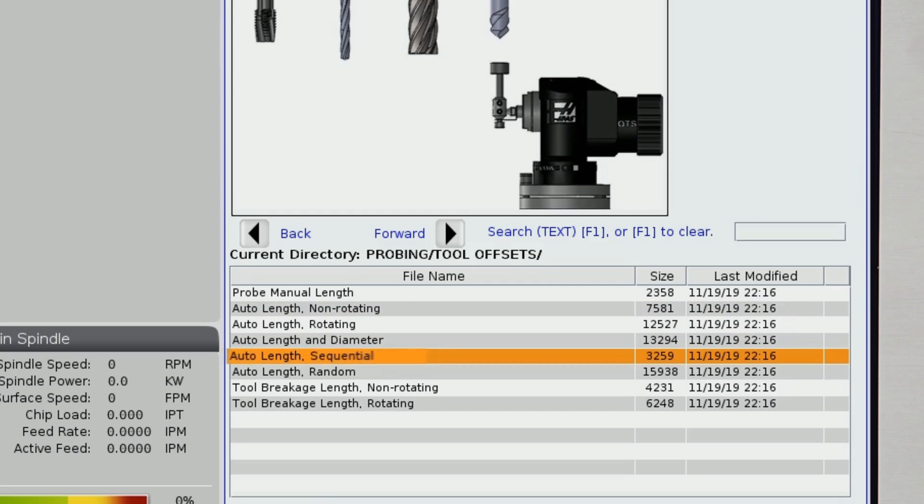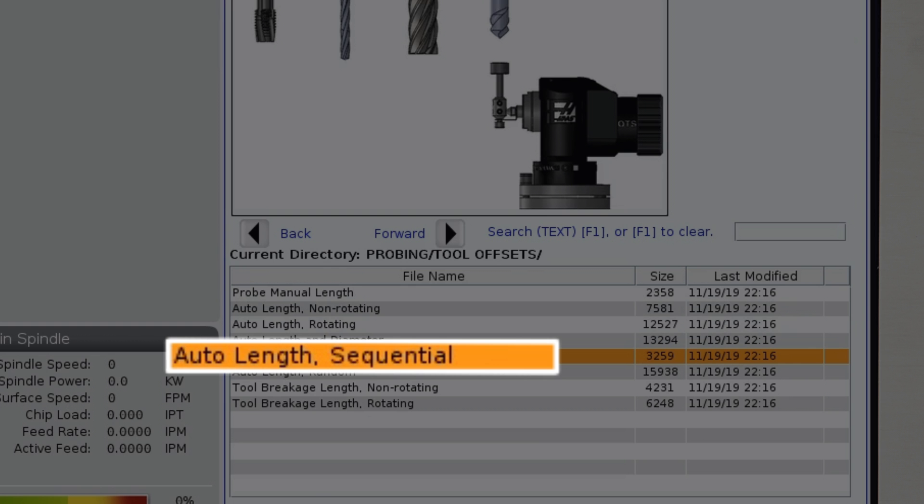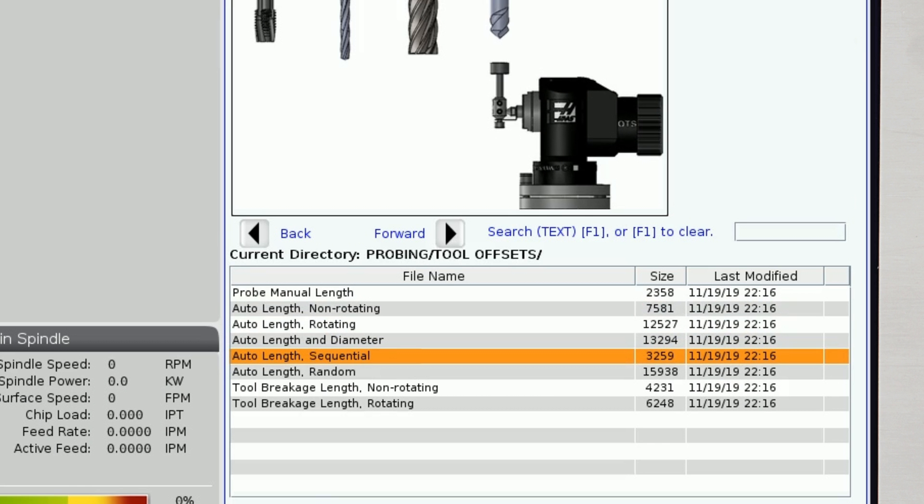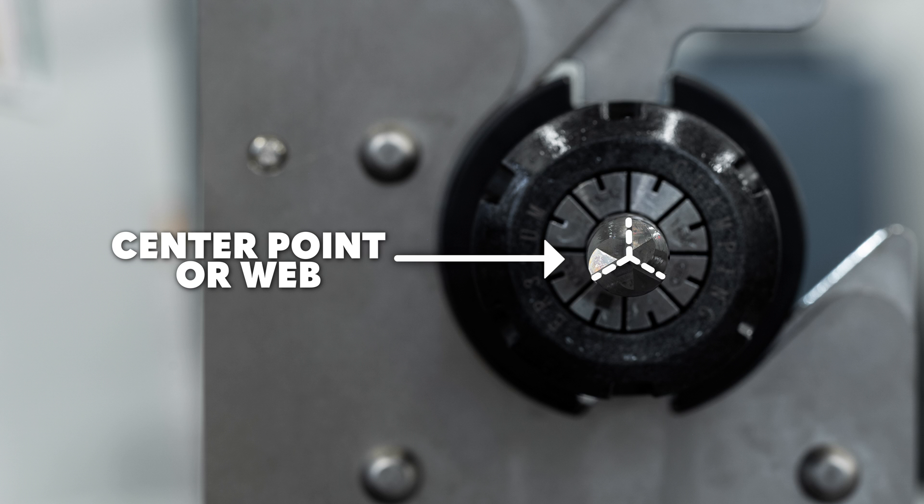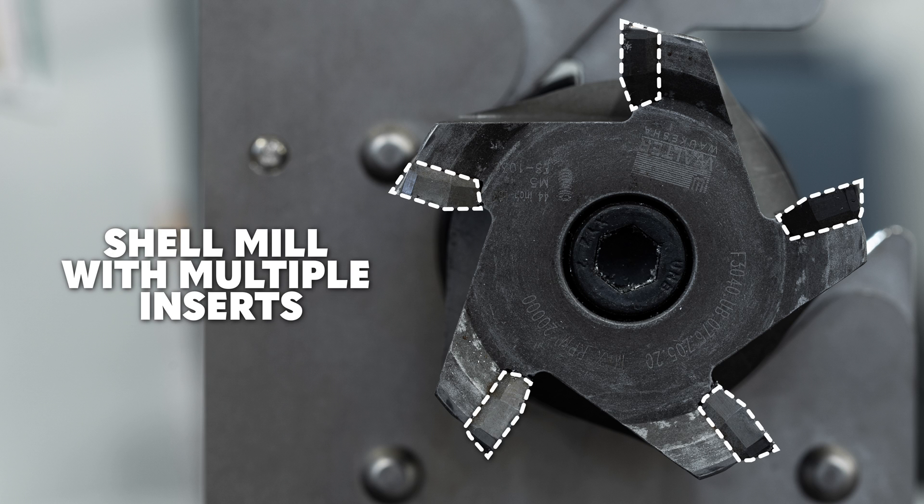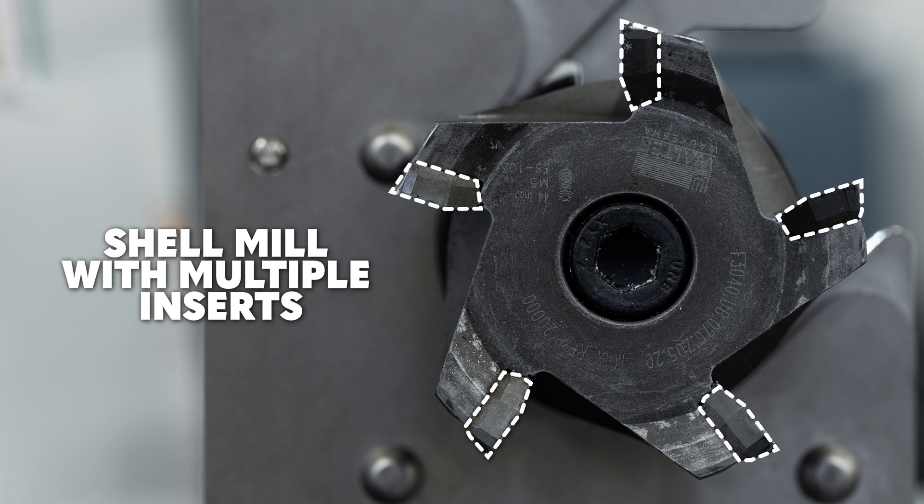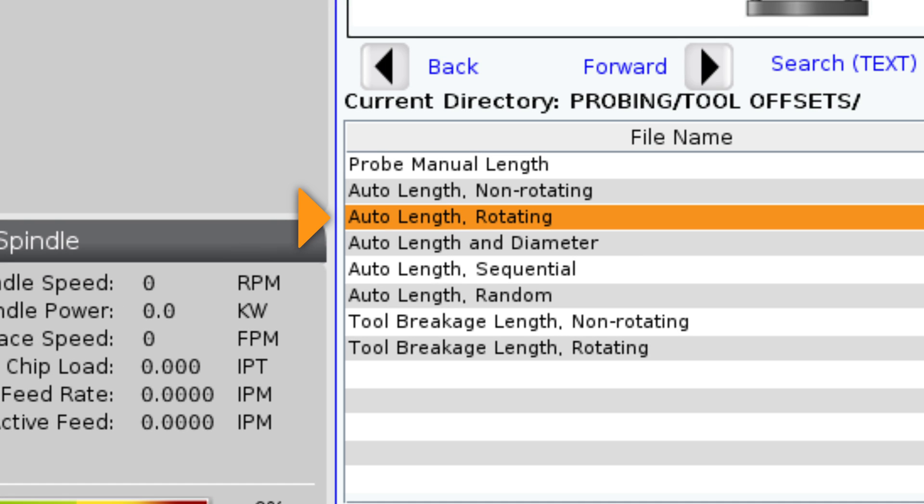For this situation, I'm going to use the auto length sequential template. All the tools I'm checking here have a center point or web where they'll touch off against the tool probe. If I have a large diameter tool with multiple inserts, like this shell mill here, then I'll need to probe that tool individually using the auto length rotating template.